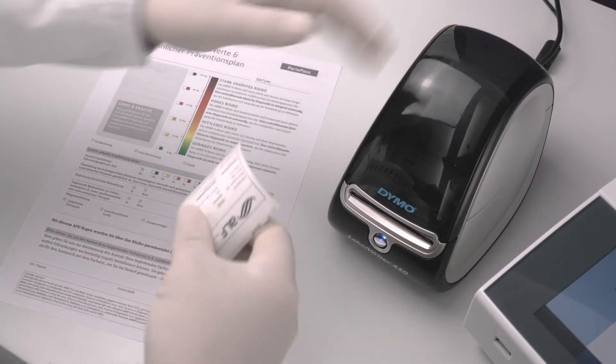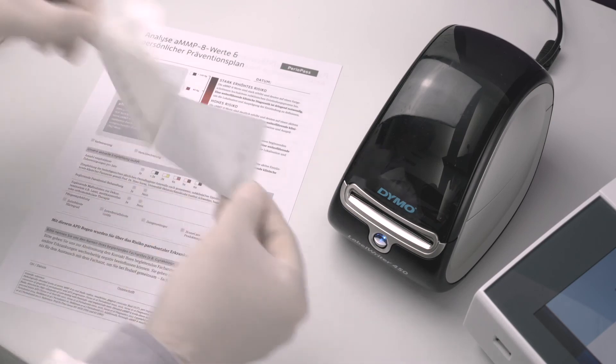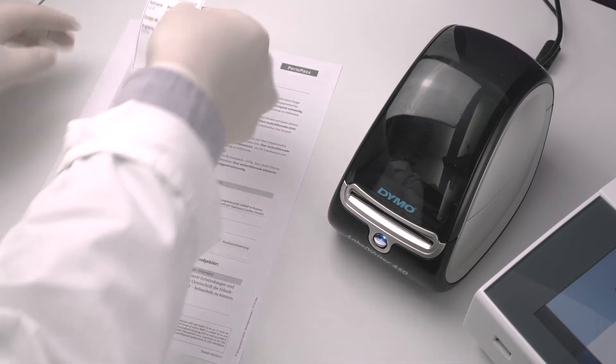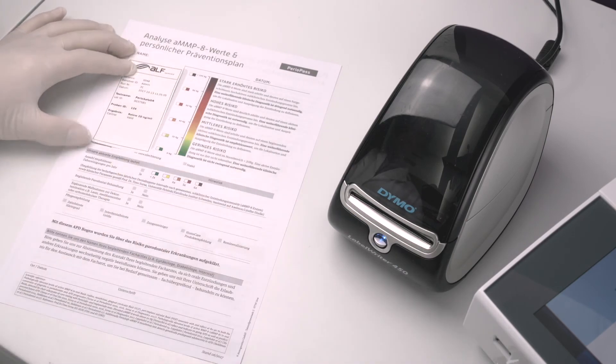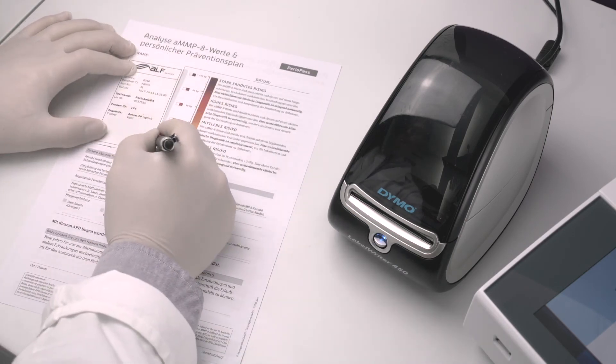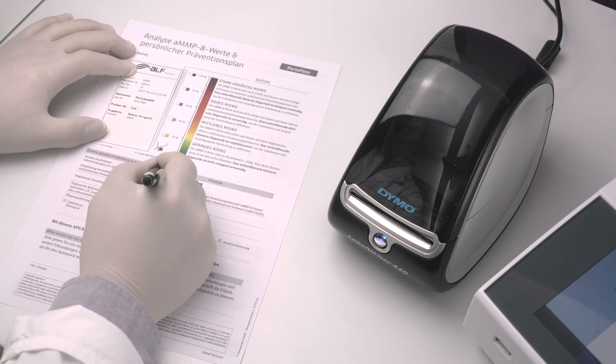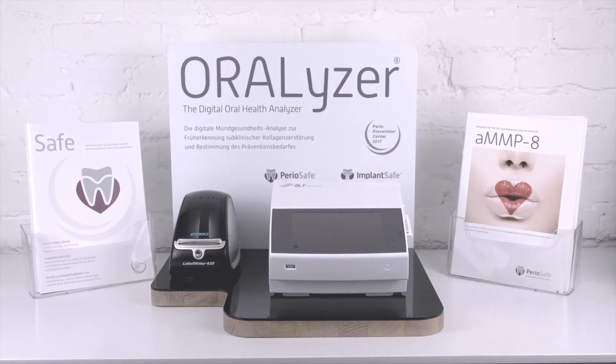A result of more than 20 nanogram per milliliter indicates that there is an elevated level of active periodontal degeneration occurring in the patient's mouth.